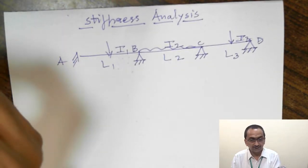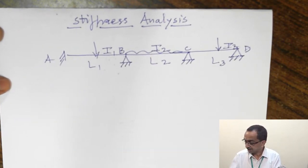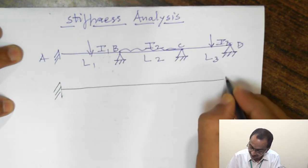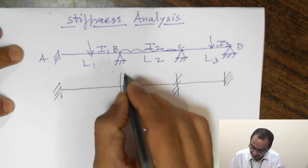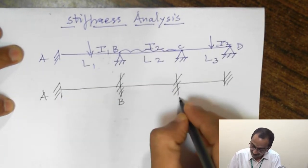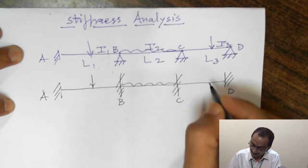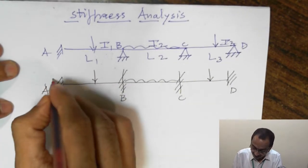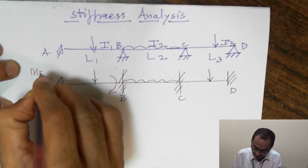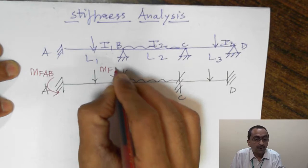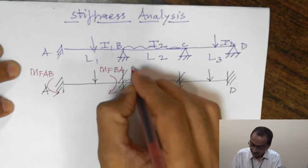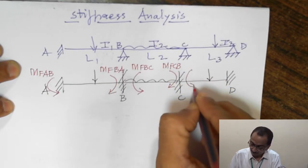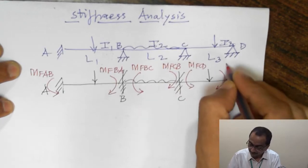Now what happens? I have already shared the fixed end moment formulae. The first thing we do is we fix all the ends — A, B, C, and D. We apply the given loads on the spans AB, BC, and CD, and then we determine the fixed end moments. These are MFAB and MFBA for span AB, MFBC and MFCB for span BC, and MFCD and MFDC for span CD.